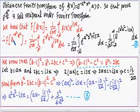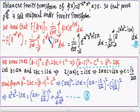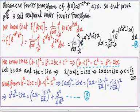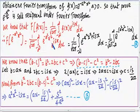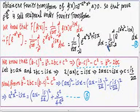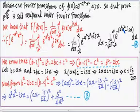Therefore, F{e^(-a²x²)} = 1/√(2π) · ∫_{-∞}^{+∞} e^(-a²x²) · e^(isx) dx. The two exponentials can be combined as e^(-(a²x² - isx)), giving us 1/√(2π) · ∫_{-∞}^{+∞} e^(-(a²x² - isx)) dx.